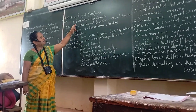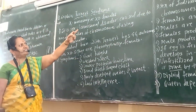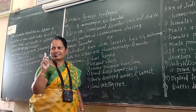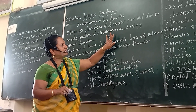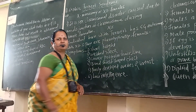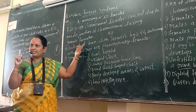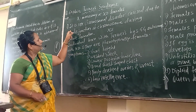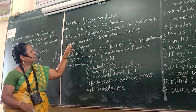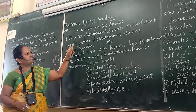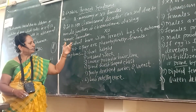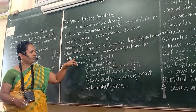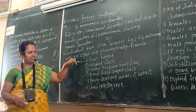Turner syndrome is a monosomy of the X chromosome, also written as X0. Normally there are 2 sex chromosomes (XX), but in this condition one X chromosome is absent, resulting in X0. That means instead of 46 chromosomes, there are only 45. It is a sex chromosomal disorder caused by non-disjunction of chromosomes during gamete formation. Individuals born with Turner syndrome have 44 autosomes and only one X chromosome — the X0 condition.